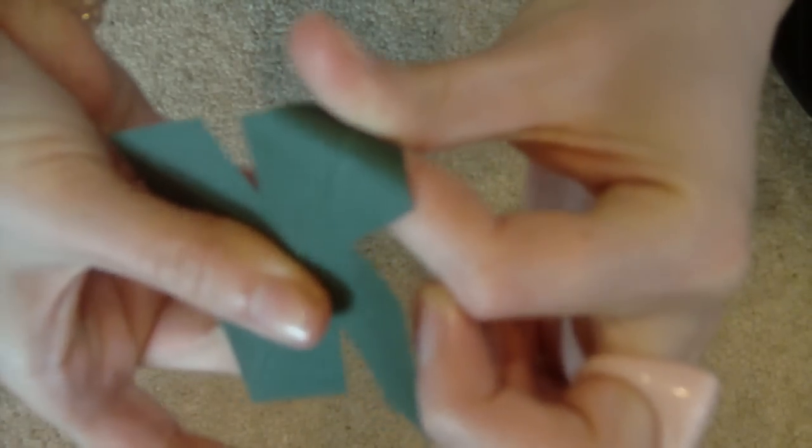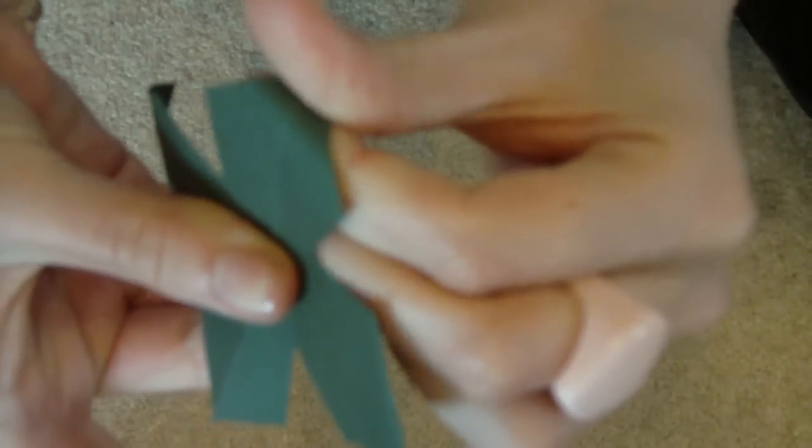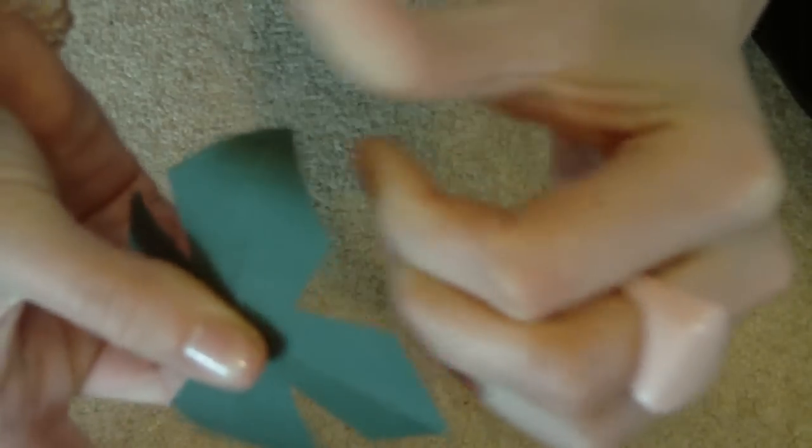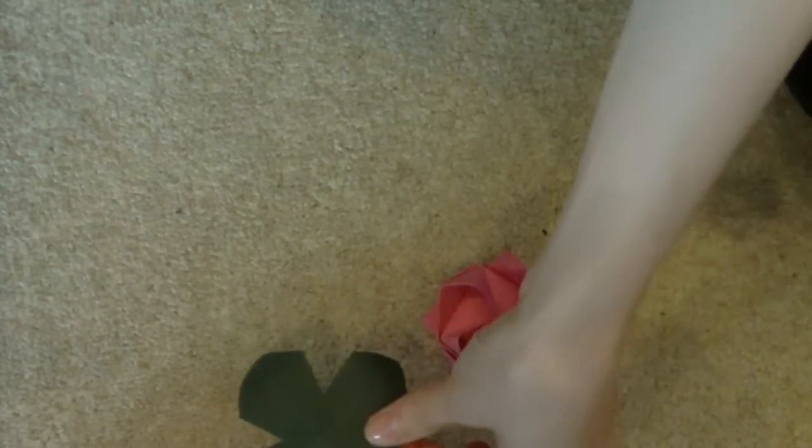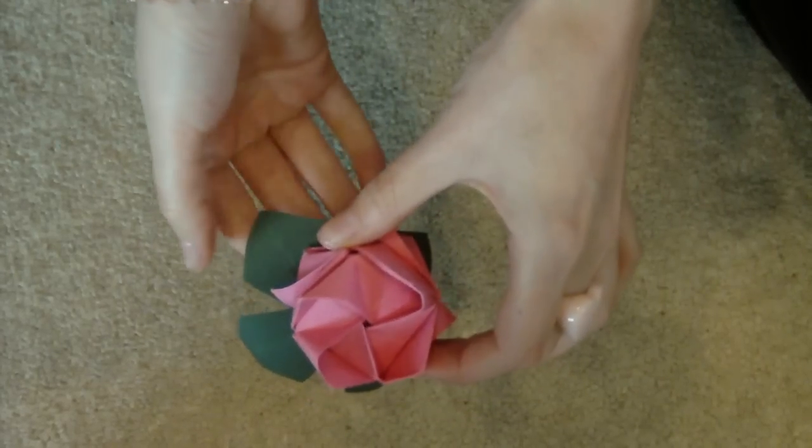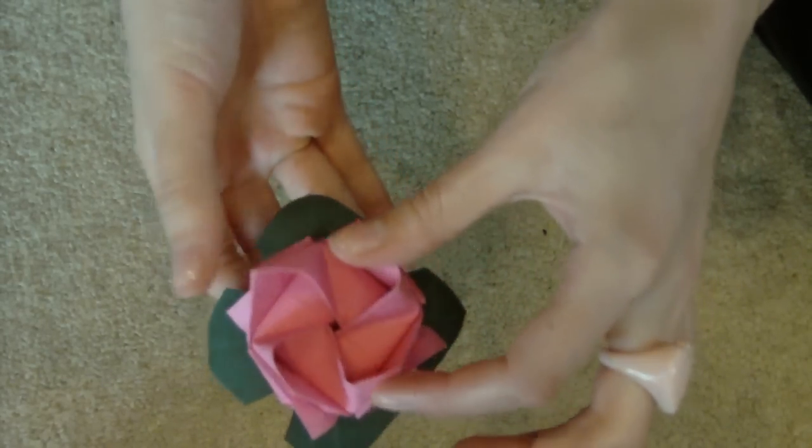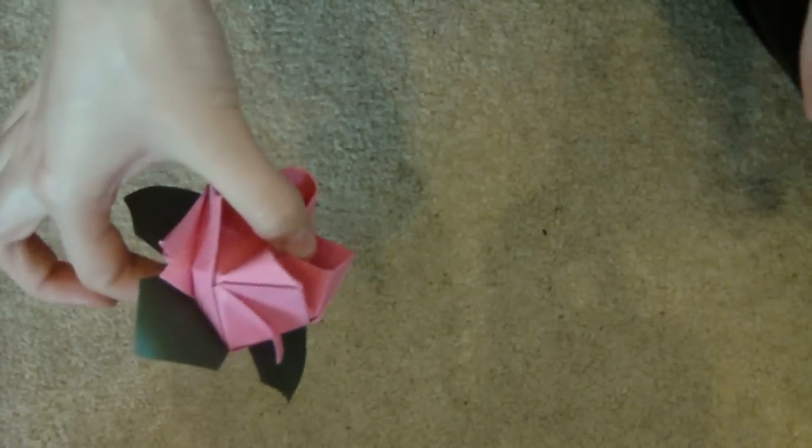Then you want to fold the leaves down a little bit so you get a bit of shape. This is the end piece that you're left with. And then you can see when it goes onto the rose, it's going to look really pretty.